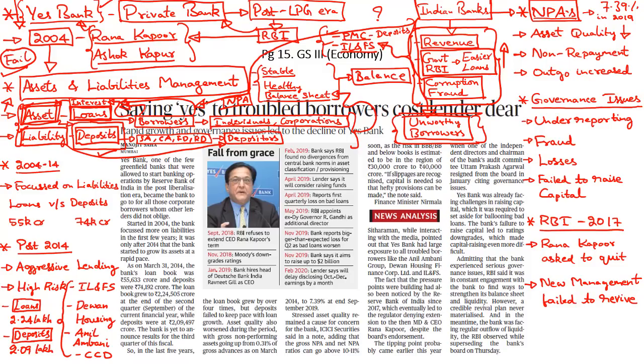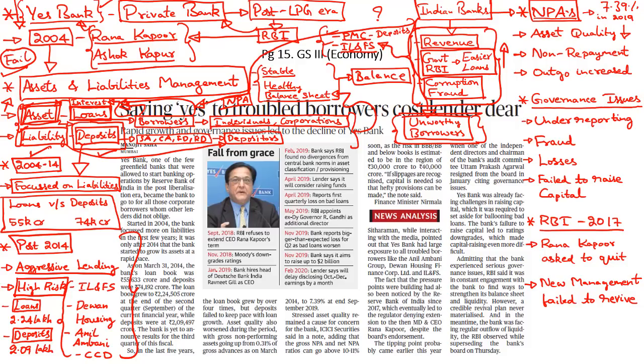If you look at Yes Bank's performance between 2004 and 2014, it was initially focused on liabilities — it was focused on honoring the demands of its depositors — so there was a healthy balance between its asset and liability ratio. But post-2014, the bank took an aggressive turn towards lending and started giving out high-risk loans. The total loans given out by Yes Bank stood at 55,000 crores compared to deposits of 74,000 crores. Post-2014, its loans had increased to 2.24 lakh crores rupees and most of them had turned into NPAs. As a result, it could not honor the demands of its depositors who had deposited around 2.09 lakh crores rupees in the bank.